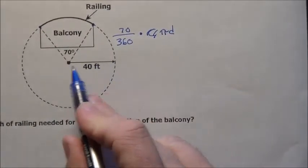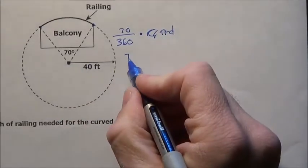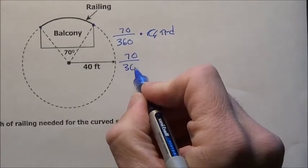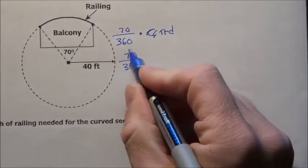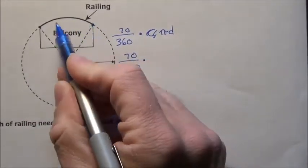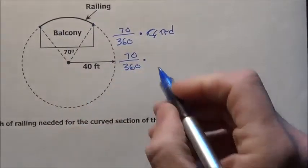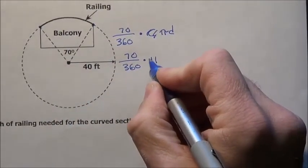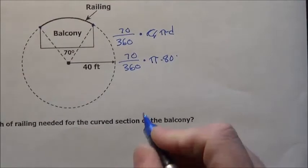Well, the diameter, if this is 40, the diameter is 80. So on the calculator, I'm going to do 70 divided by 360, because that's the fractional part of this entire circumference that we want, because we just want that 70 out of the total 360, times pi times 80. When I do that,